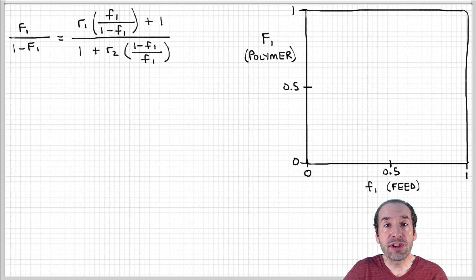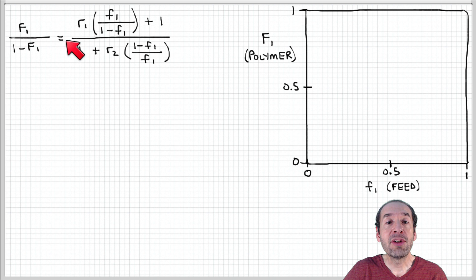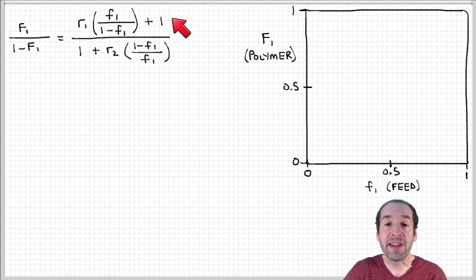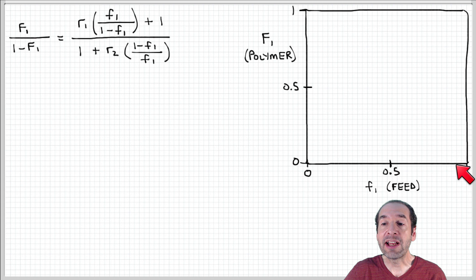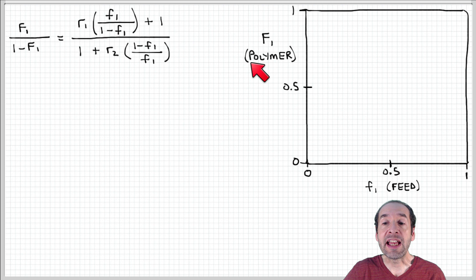Now that we've obtained the copolymer equation, we have a way to determine what will be the composition of a copolymer given the composition of the feed or the reaction mix in terms of monomers 1 and 2. In order to get insights into what this equation predicts for different circumstances, I'm going to plot the composition in the copolymer on the y-axis versus the composition in the feed on the x-axis, in terms of the mole fraction of monomer 1.